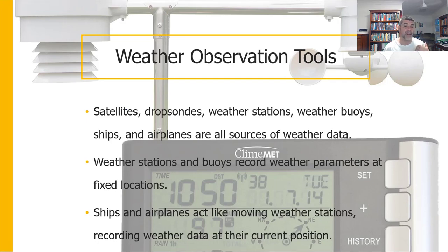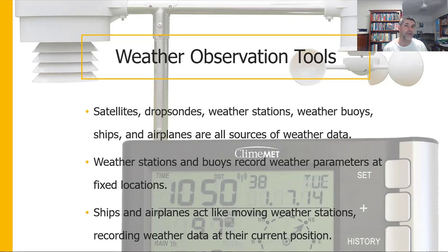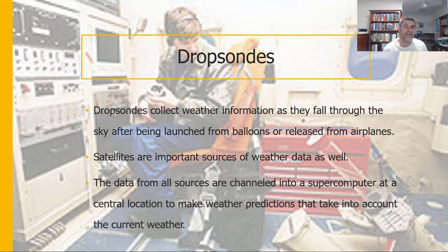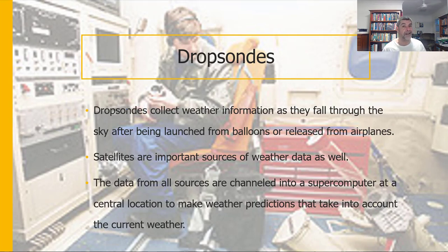Some data sources may be located in the oceans, or on moving objects like ships or aeroplanes, recording data in real time over a range of locations. Each of these provides more data coming back to a centralised computer system that draws in all of that data and makes sense of it. Drop zones are basically a device — to oversimplify it — like going up in a balloon and dropping a data-logging thermometer that falls to the earth, recording temperature all the way down at different altitudes. These are really good ways of getting data about what's happening to the air at different altitudes.